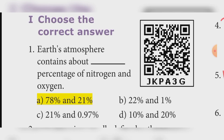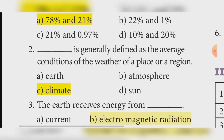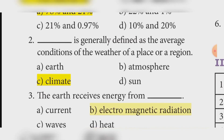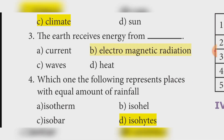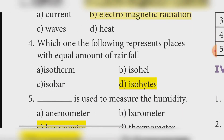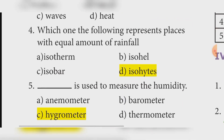Second question: Climate is generally defined as the average condition of the weather of a place or region. Answer: Option C — Climate. Third: The Earth receives energy from? Answer: Electromagnetic radiation, Option B. Fourth: Which represents a place with equal amount of rainfall? Answer: Option D — Isoheids.